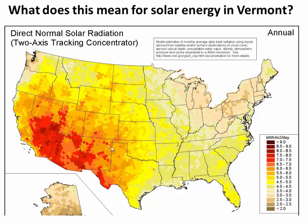What does this mean for solar energy across the United States? This plot shows kilowatt-hours per meter squared per day that you could make with a solar tracker — literally an estimate of how much electricity you could make. Obviously you're best off in Arizona and Southern California where it's sunny all the time, because that's an area where cold air is down-welling and warming up, giving us no clouds.